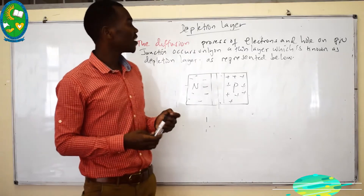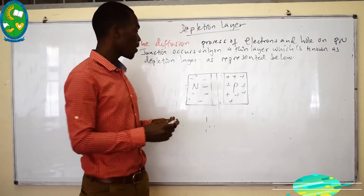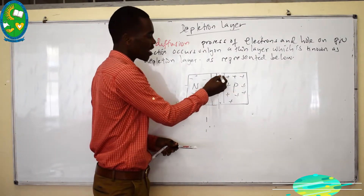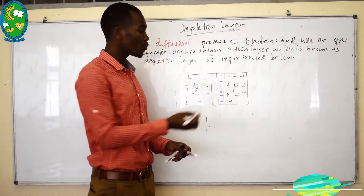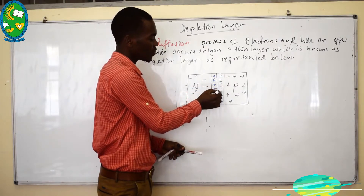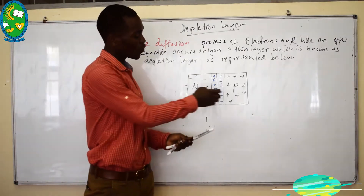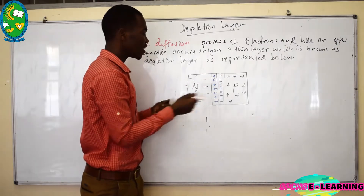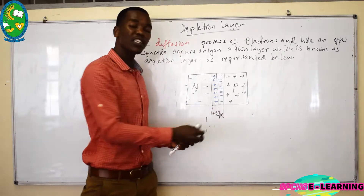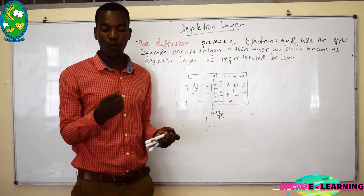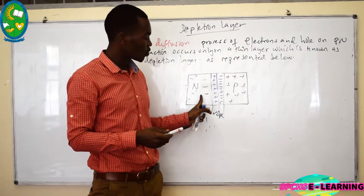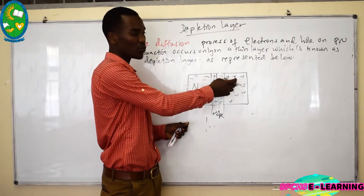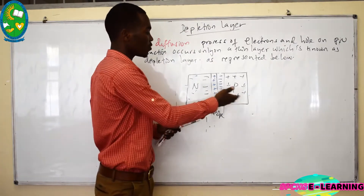The depletion layer forms as the diffusion process occurs: electrons from N-type material move to the P-type side, crossing the boundary and accumulating there, while holes or positive charges move across and accumulate on the other side. These two layers are very thin, occurring only in a thin region, which is known as the depletion layer. This negative charge creates a barrier for further electron diffusion, and the positive charge prevents further holes from diffusing.